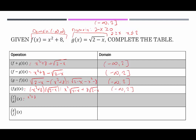For f over g, the quotient is (x² + 8)/√(2 − x). Not only can we not have the radicand negative, but now the square root is in the denominator, so √(2 − x) also cannot equal zero. Setting √(2 − x) = 0 and squaring gives 2 − x = 0, so x = 2 is now restricted. The domain is therefore (−∞, 2) — with a parenthesis instead of a bracket — because 2 is excluded.